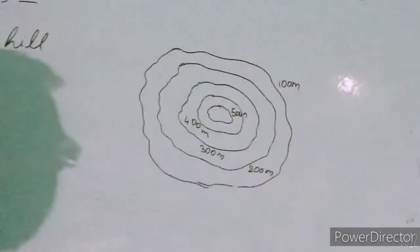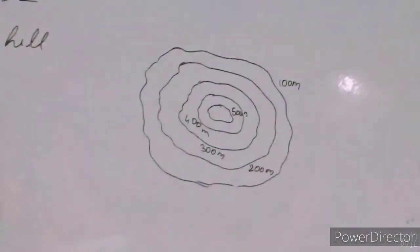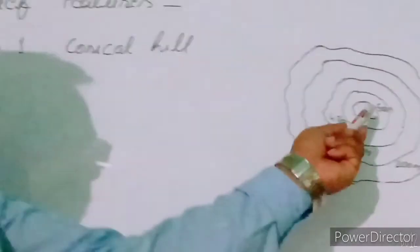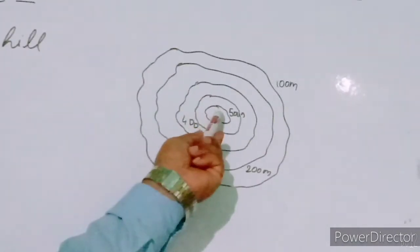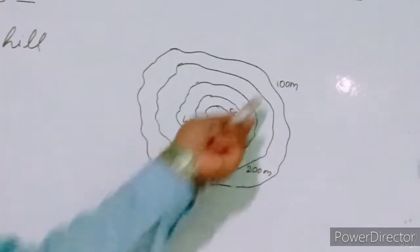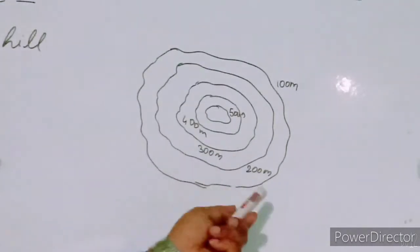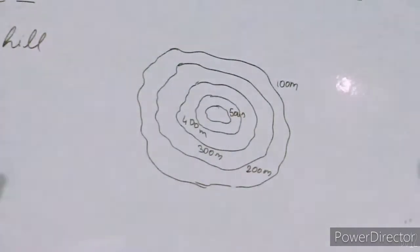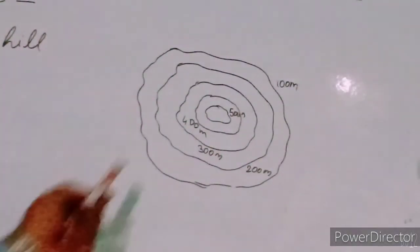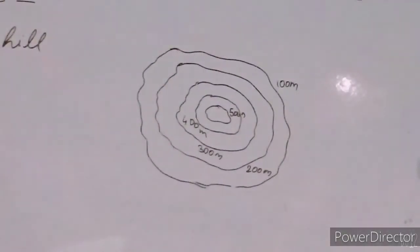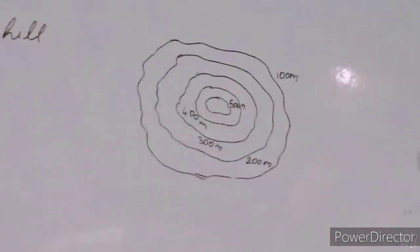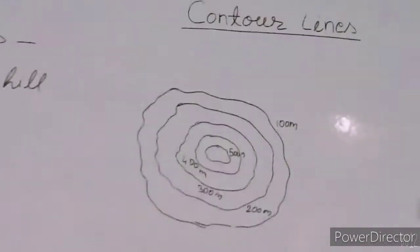Again, the pattern of contour lines to represent a conical hill: in the middle we have a circular region, and all around this circular region many contour lines are drawn at equal intervals of distances. This pattern of contour lines represents the conical hill on the topo sheet.